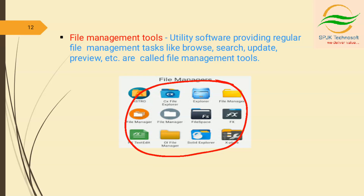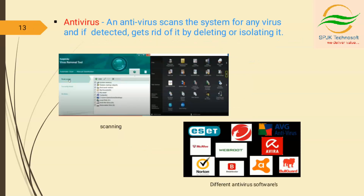The next utility is antivirus. You can scan the drives, pen drives, and system by using antivirus software. Examples of antivirus software include Avira, Avast, Webroot, etc. This diagram shows the antivirus scanning process — it scans the files, drives, pen drives, etc.